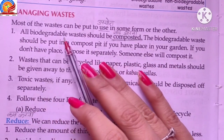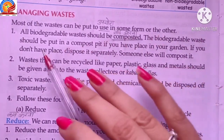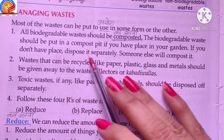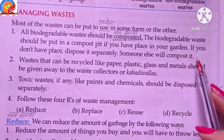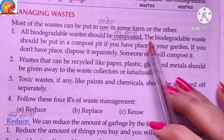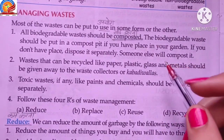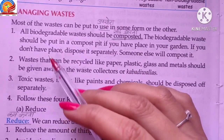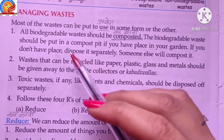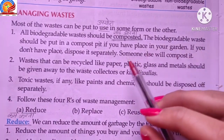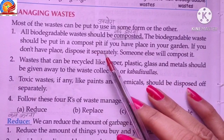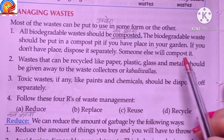Point first: all biodegradable waste should be composted. The biodegradable waste should be put in a compost pit. If you have space in your garden, dig a pit and put the waste in it. Biodegradable waste will turn into compost (खाद) and you can use it. If you don't have space, give the biodegradable waste to someone else who can compost it.